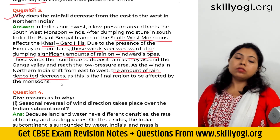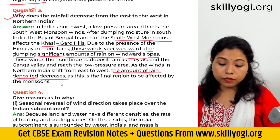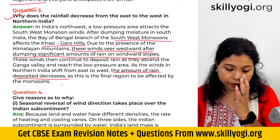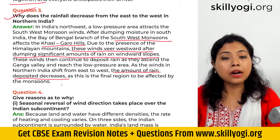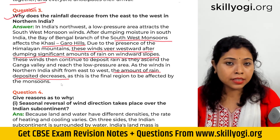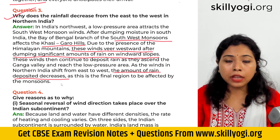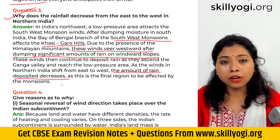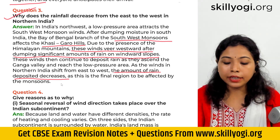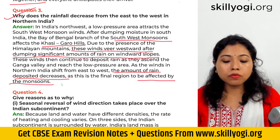The monsoon rains first affect the northern plains region, then the Garo-Khasi hills region, then the Himalayan Tarai region, and after that they move to the western part of India, which is the last region affected by the monsoons.